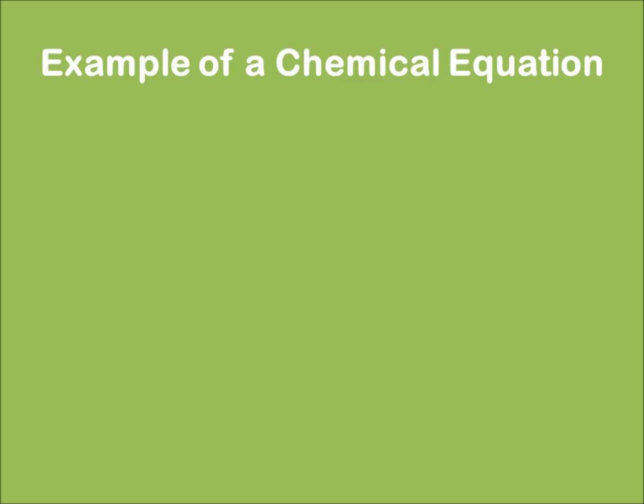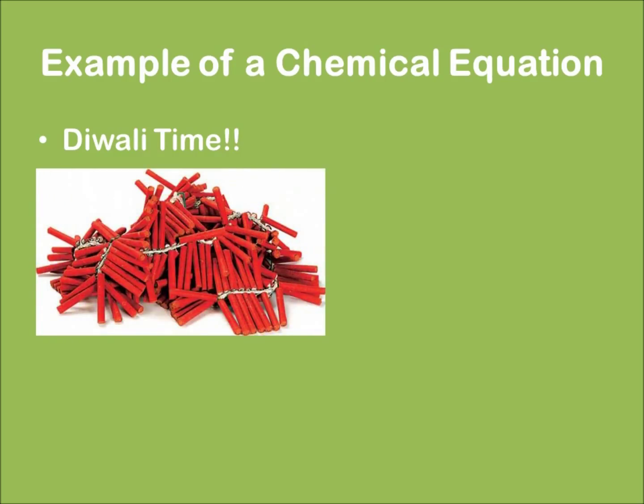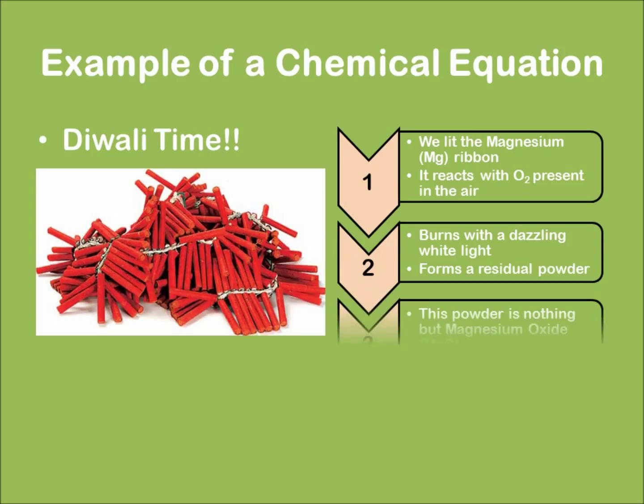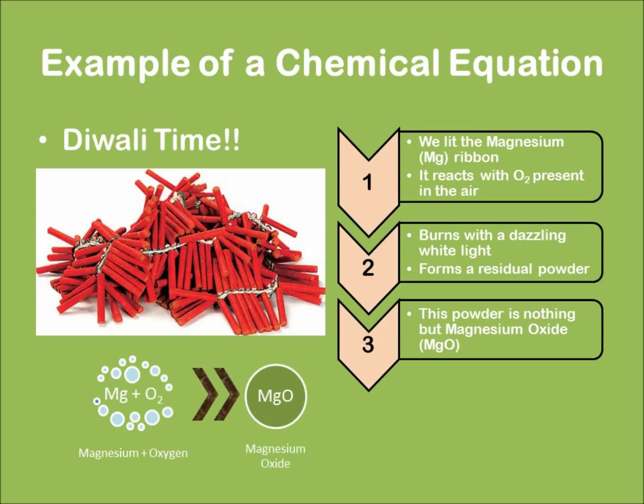Now let's discuss an example of a chemical equation, the same old example of Diwali. On the right of your screens, there is a list of what actually happens in this reaction. First, we light the magnesium ribbon. Then it burns with a dazzling light due to the presence of oxygen in the air. It gives us a powder of magnesium oxide. A schematic has been shown below. And what we actually write on paper is the one highlighted in white: Mg plus O2 gives MgO. This is a chemical equation.